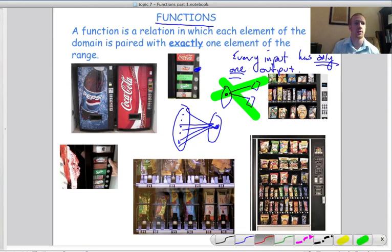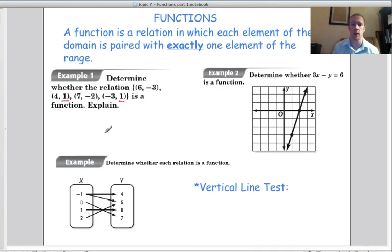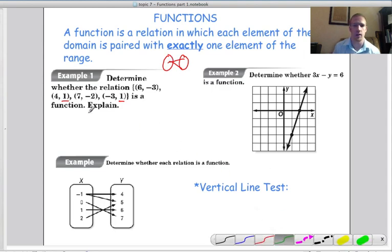Alright, so let's do some examples here. Determine whether the relation is a function. Well, you have (6,-3), (4,1), (7,-2), and (-3,1). Alright, so they're all different x's, so they're all different inputs, so there's no way you could have one input that gives you two different outputs. So even though we have the same y a couple of times, that's fine. So let me just show you. The easiest way for me is to just look at this picture. If that happens, one input, two outputs, it's not a function.